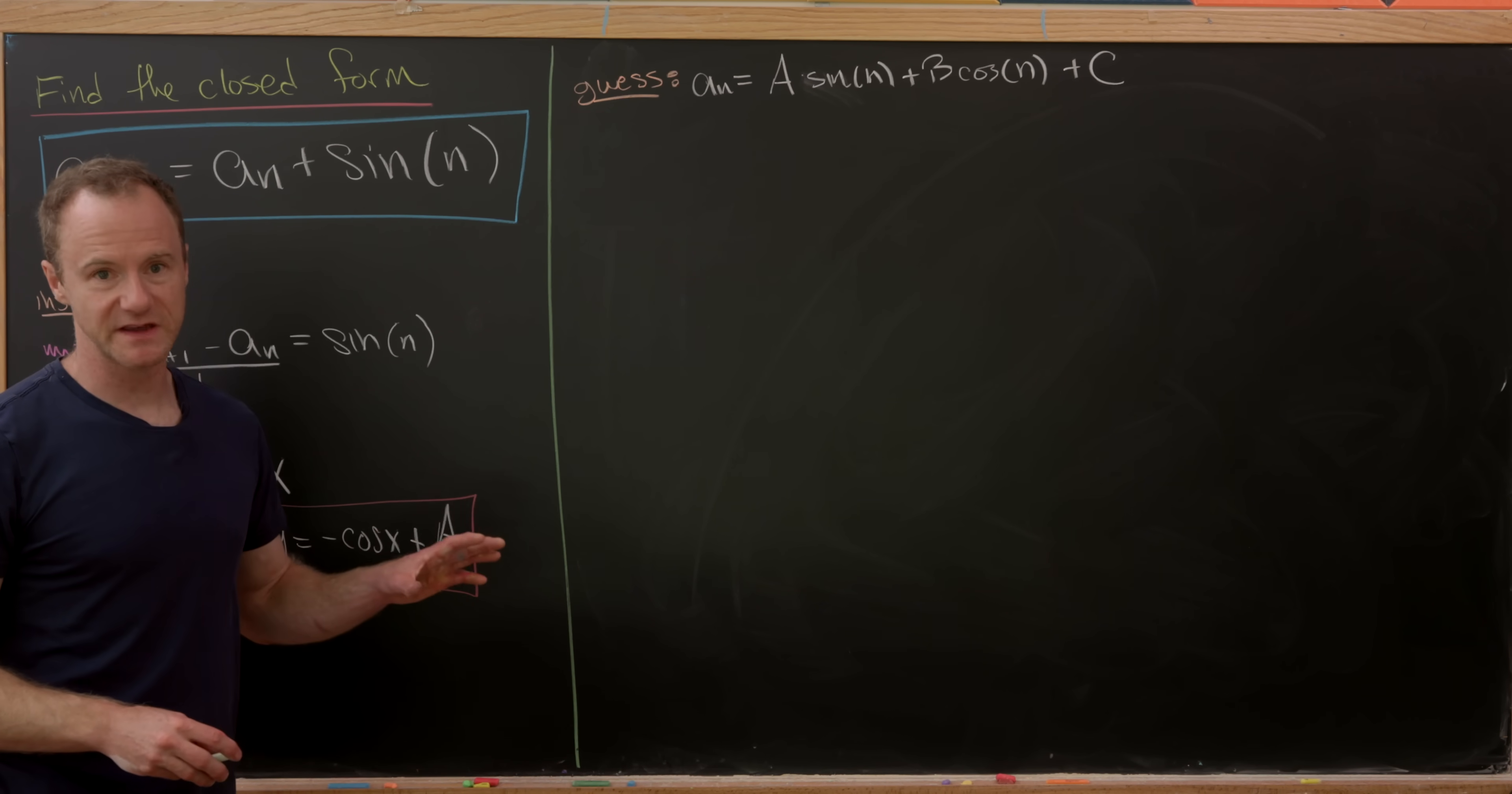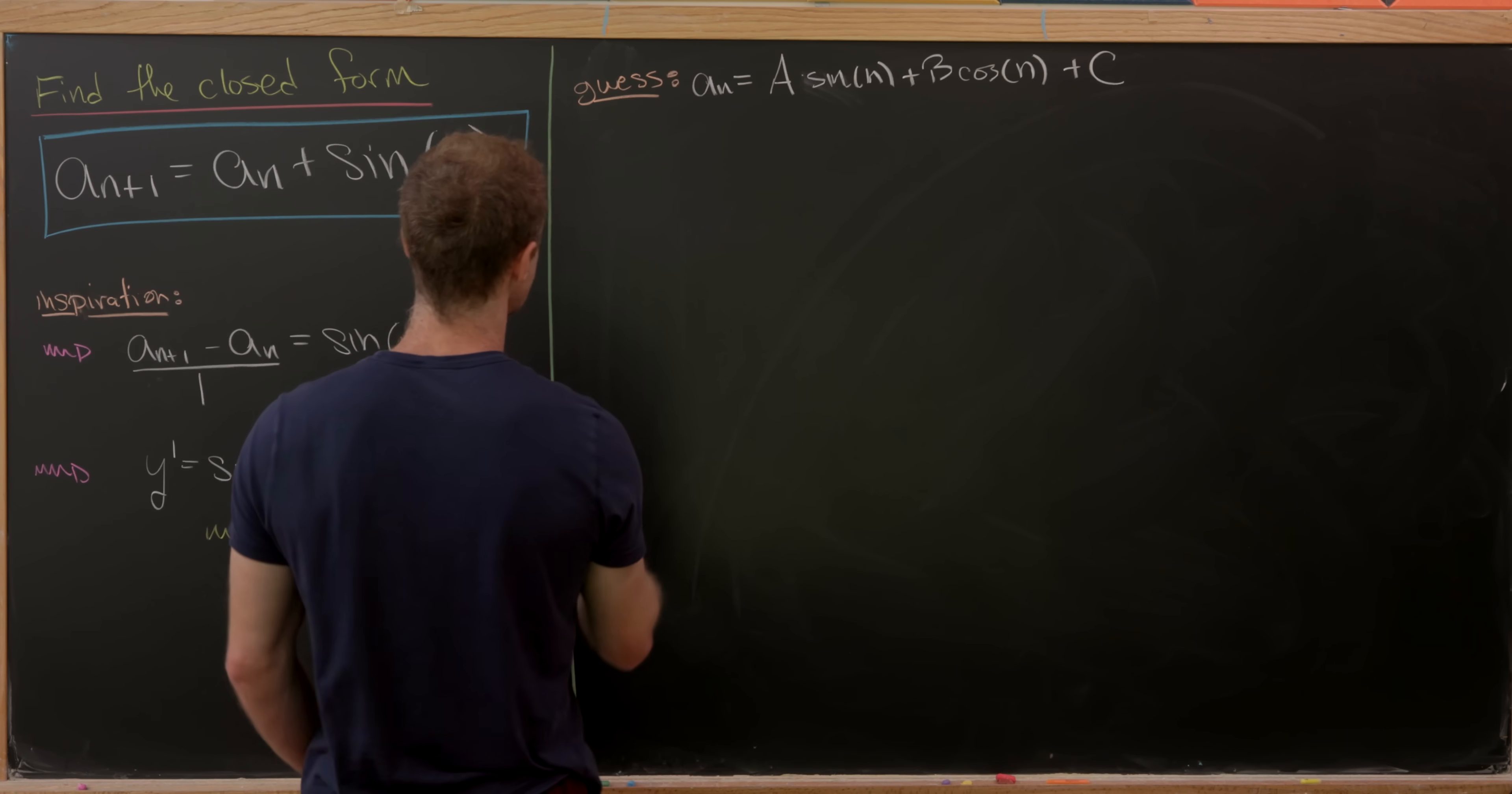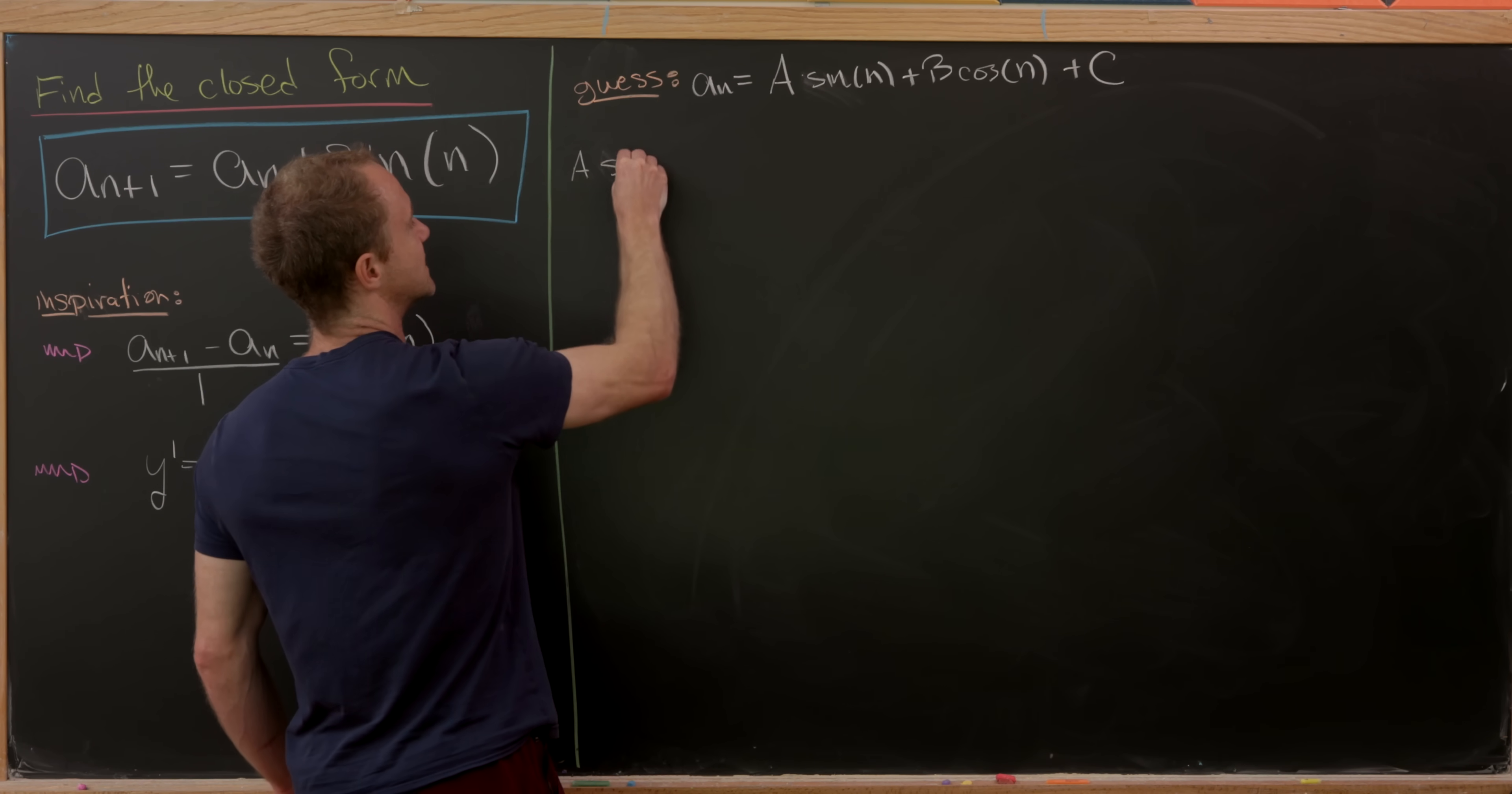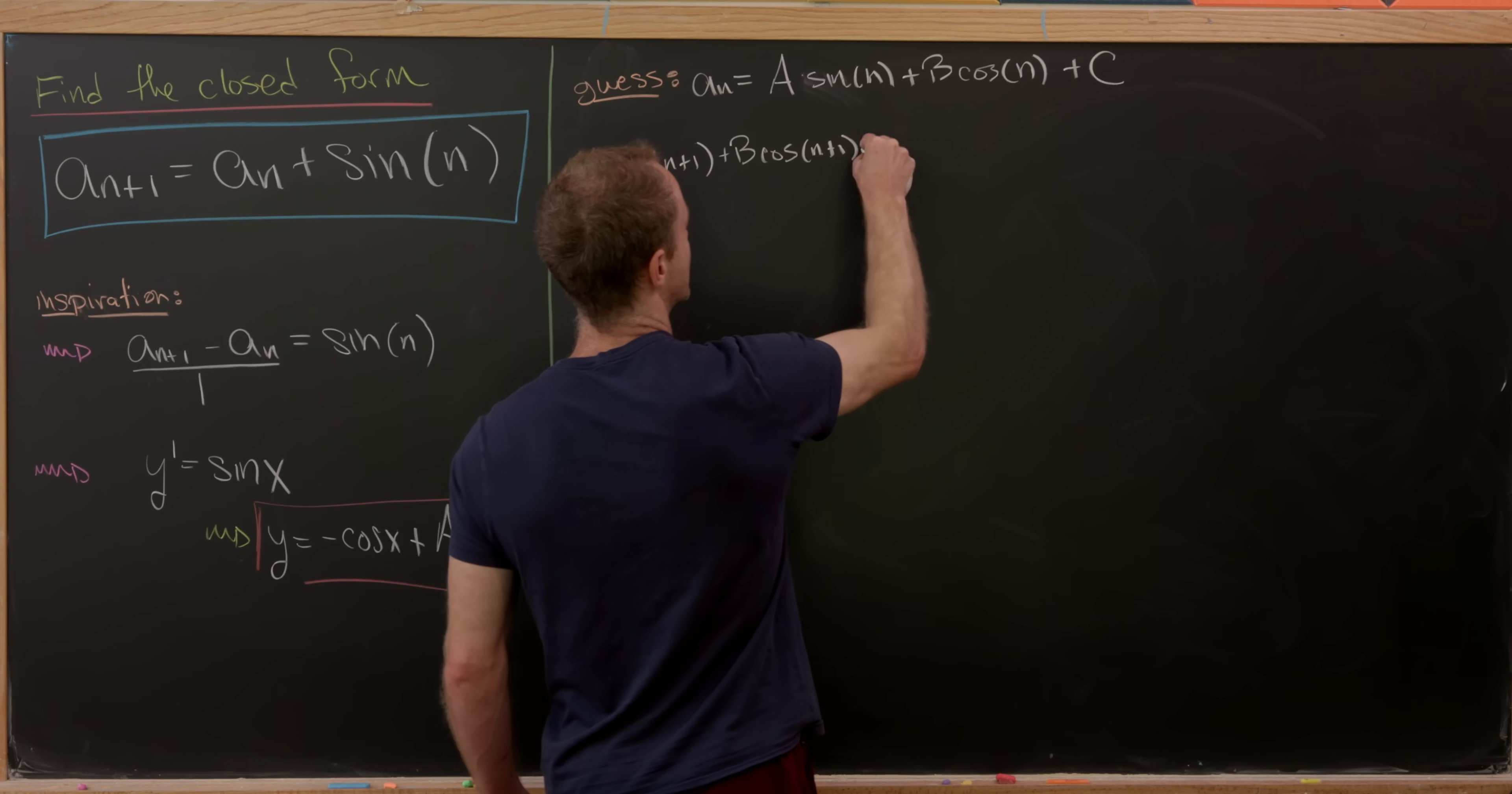So now let's plug this into our difference equation. So let's do a n plus 1 first. So notice a n plus 1 is a times sine of n plus 1 plus b times cosine of n plus 1 plus c.